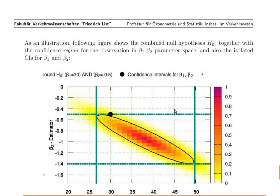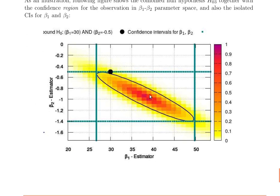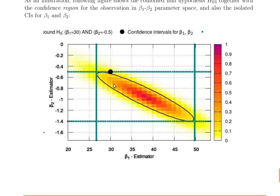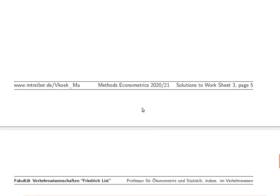Here is just an illustration: the two-dimensional probability density of the estimation errors shows the two-dimensional null hypothesis point, which is quite outside the center of the distribution but still not so far outside that it can be rejected. That was tutorial number three for the master's course in econometrics. Many thanks.